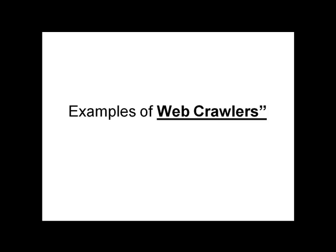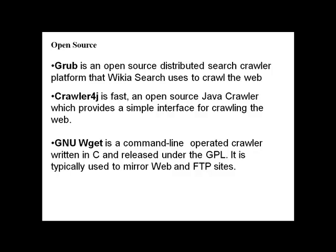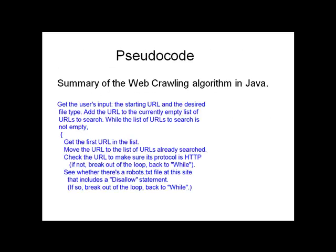Here are some examples of web crawlers. For general purpose: Googlebot for the Google search engine, Yahoo crawler for the Yahoo search engine, WebFountain for IBM. ArcWeb .NET is a .NET web crawler. Open source web crawlers include Grub, Crawler4j, and GNU Wget. Different web crawlers are implemented using different languages: Googlebot uses C++ and Python, WebFountain uses C++, Crawler4j uses Java, ArcWeb .NET uses C# and Lucene.